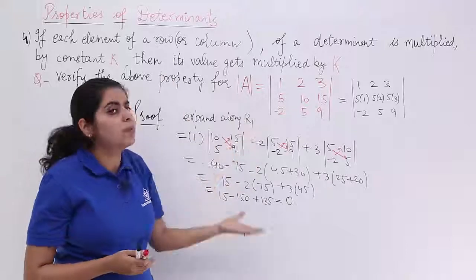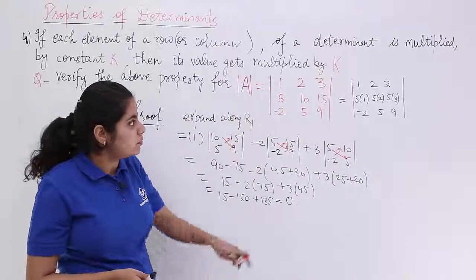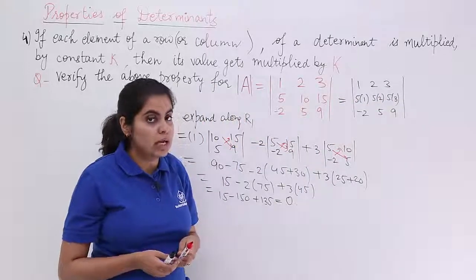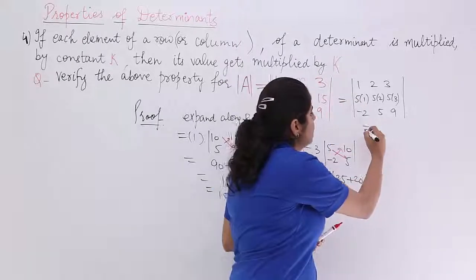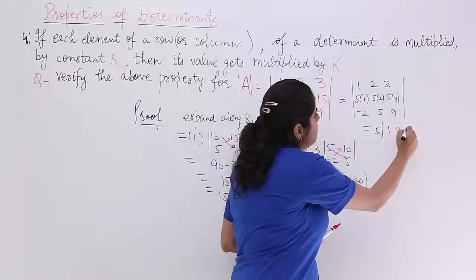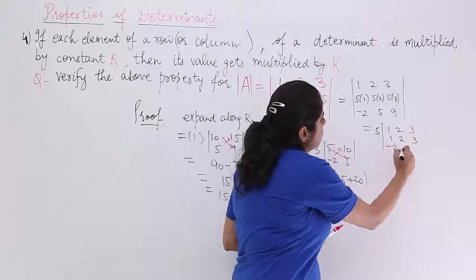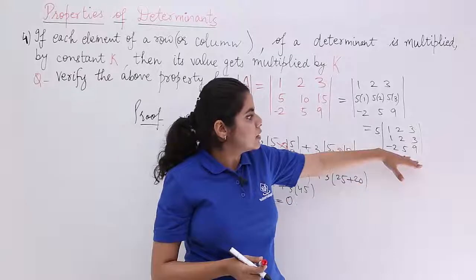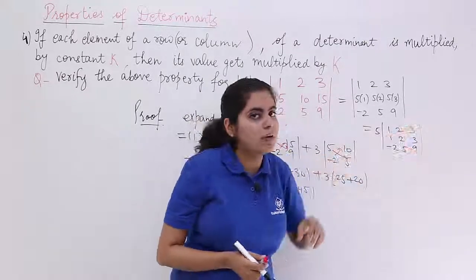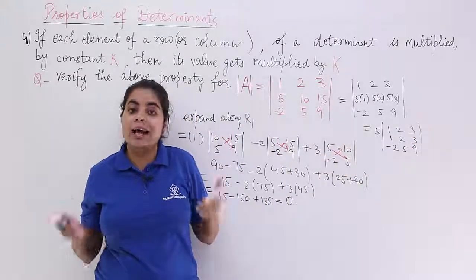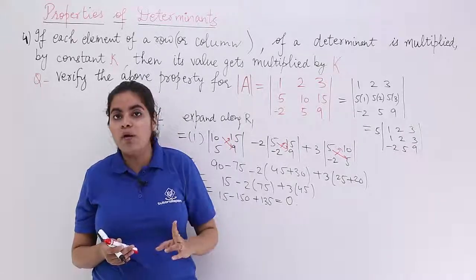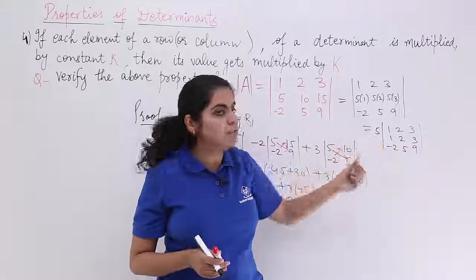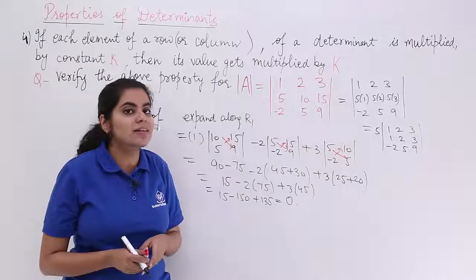But what was the property and how this has come 0? You know that 1, 2, 3, 5 into 1, 5 into 2, 5 into 3. By the previous property that we studied, can this determinant be written something like this? We are basically taking 5 common. If 5 is common, you have this value in the determinant. And you see that row 1 and row 2 are identical. If 2 rows are identical, the value of determinant is 0. And 0 into 5 is also 0. That is why the answer is 0.